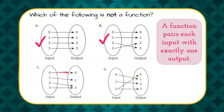Looking at choice C, 0 to 0, 1 output. 1 to 1, 1 output. 2 to 3, 1 output. 3 to 3, 1 output. It's a function.